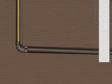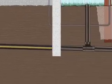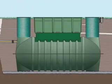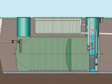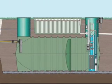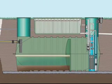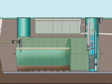Sewage enters the first compartment of the processing tank through its inlet. In the first compartment, the sewage separates into scum, sludge, and the liquid effluent.